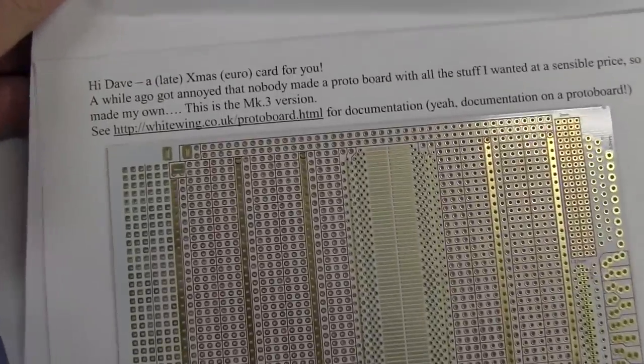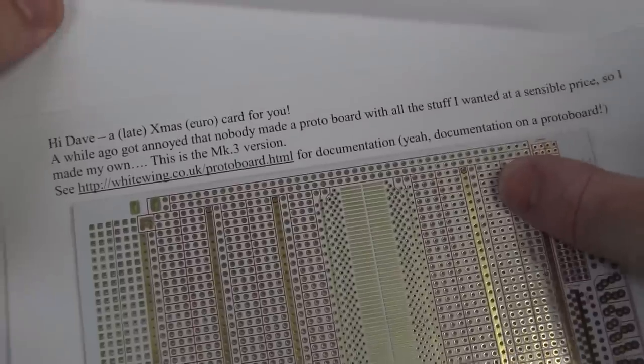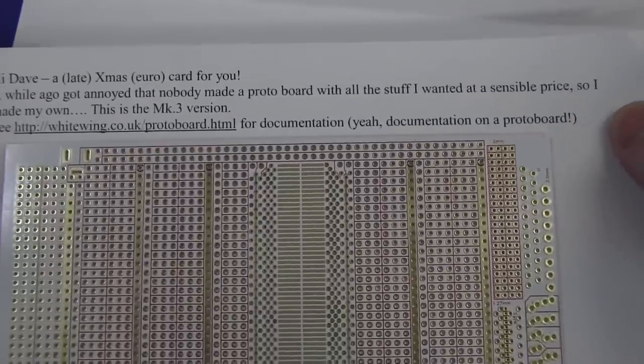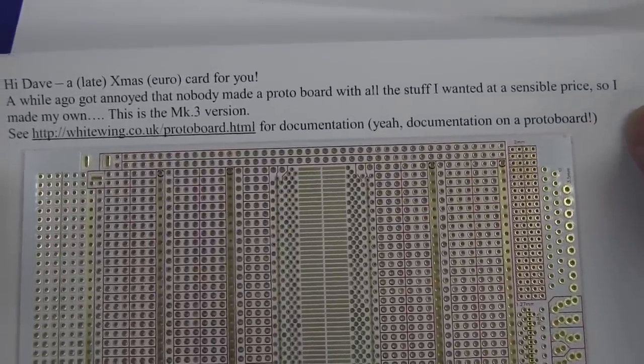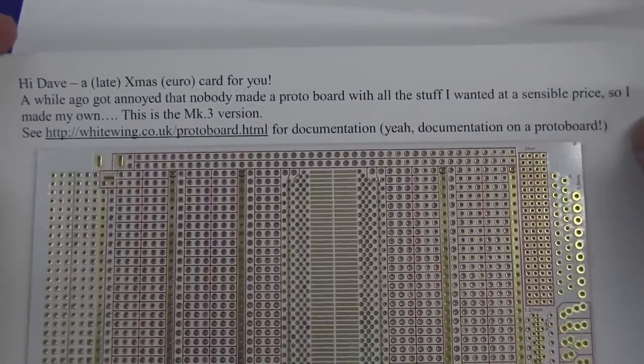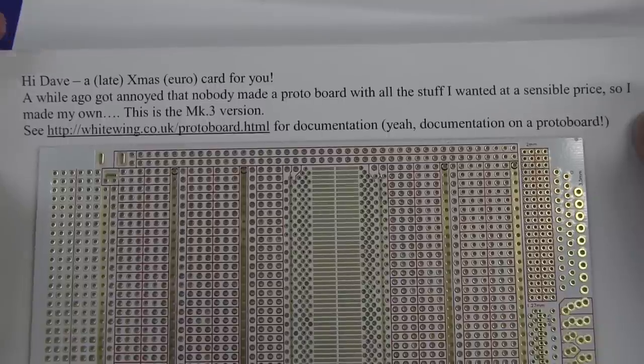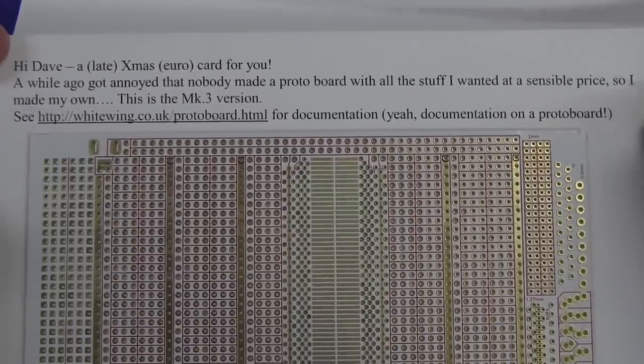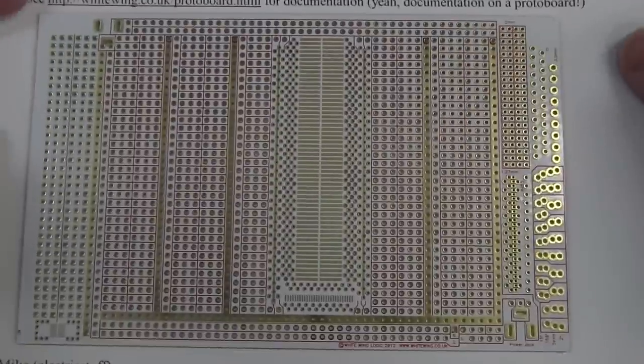Come on. Get out of here. Big scary laser. Do not look into beam with the remaining eye. Which apparently, that was on the Big Bang Theory in the laser lab. There, apparently, they used Mike's, that's his design. Yep, it is. It's one of his prototype boards. Ta-da. Here we go. Hi, Dave. A late Christmas euro card for you. A while ago, I got annoyed that nobody made a protoboard with all the stuff I wanted at a sensible price. So I made my own.